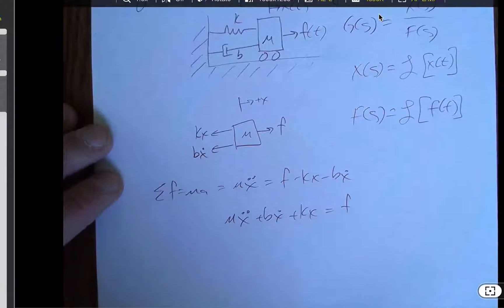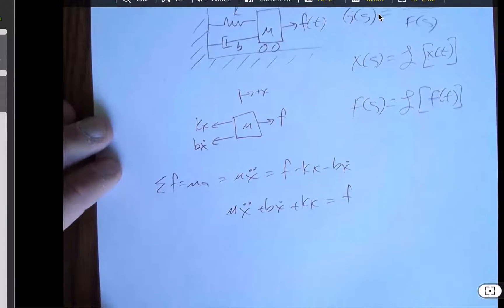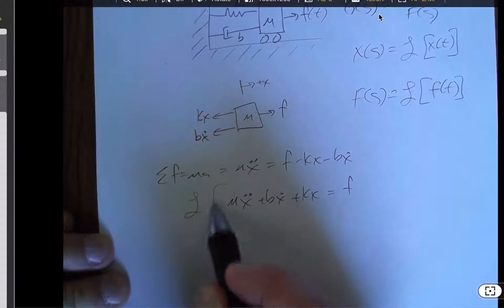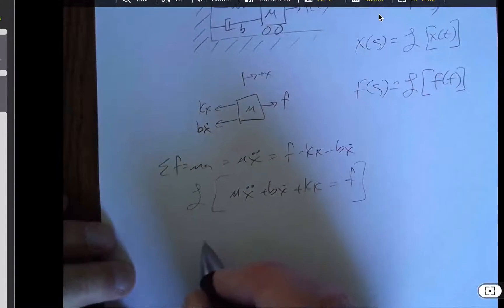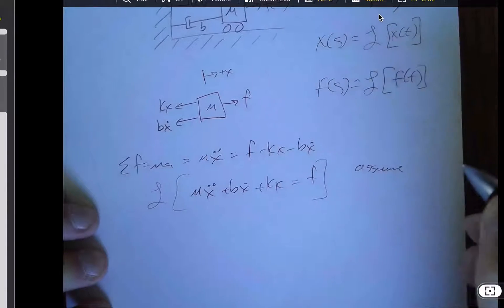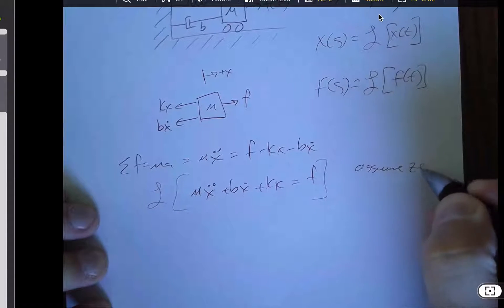That mx double dot plus bx dot plus kx is equal to that. And I now need to Laplace transform both sides of that. And when we Laplace transform, because we're trying to find a transfer function, we assume zero initial conditions.